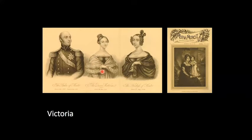The Duke of Cumberland was also her heir presumptive before she had her first child — the fourth son of George the Third who had hoped to sit on the British throne. Victoria married her cousin Albert in February 1840 and they had nine children — five daughters and four sons. When Albert died in 1861, Victoria wore mourning for the rest of her life. Victoria's reign was a time of great industrial expansion, and in 1842 Victoria was the first reigning monarch to travel by train.